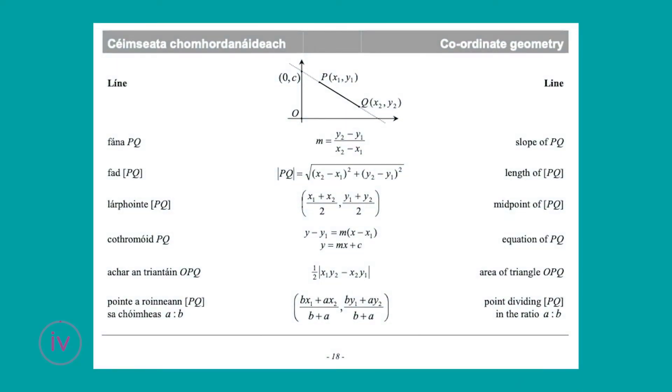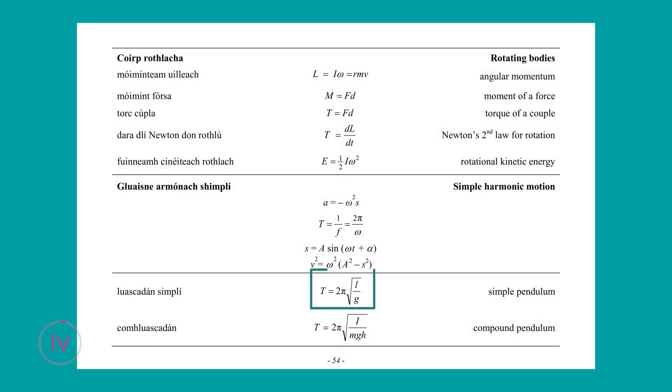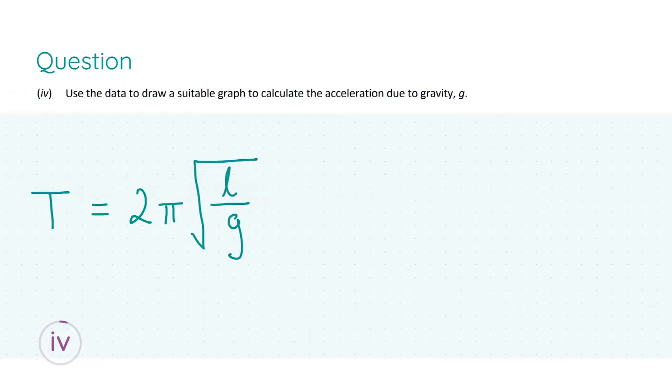Before we move on to part four, I'd like to draw your attention to pages 18 and 54 of your formula and tables book: page 18 for the equation of a line formula, y equals mx plus c, and page 54 for the simple pendulum formula. For part four we are asked to use the data in the table to draw a suitable graph to calculate the acceleration due to gravity g. The formula which we'll derive our graph's relation from is the simple pendulum formula.